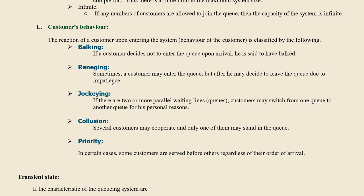The next characteristic is customer behavior — the reaction of a customer upon entering the system. It is classified into the following types: balking, reneging, jockeying, collusion, and priority. Balking means if a customer decides not to enter the queue upon arrival. For example, if you go to buy a movie ticket and see the queue is very long, and you decide not to enter — this is called balking.